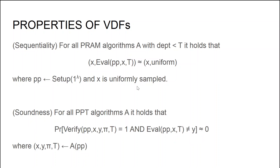The second property we consider is soundness, which says that for all probabilistic polynomial time algorithms A, the output of algorithm A — consisting of an instance x, output y, and a proof pi — cannot convince the verification algorithm to accept if x and y is not a valid input-output instance of the VDF. In particular, an adversary is not able to fool the verification algorithm to accept a tuple x, y such that f(x) is not equal to y.